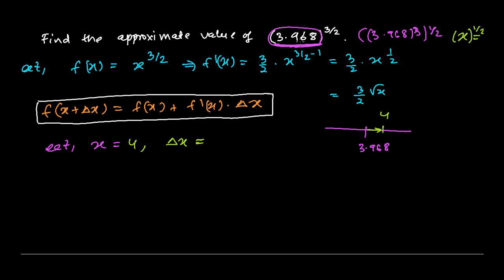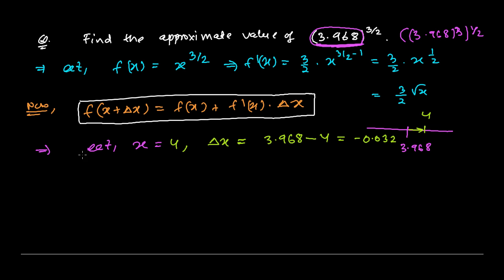With x = 4, we calculate Δx = given number − x = 3.968 − 4 = −0.032. Now we substitute x = 4 and Δx = −0.032 into the approximation formula.